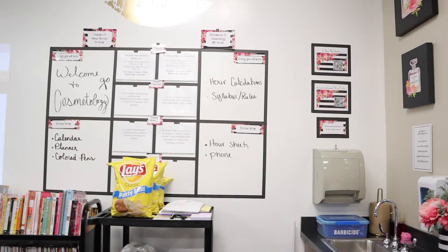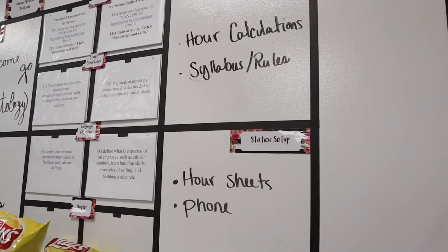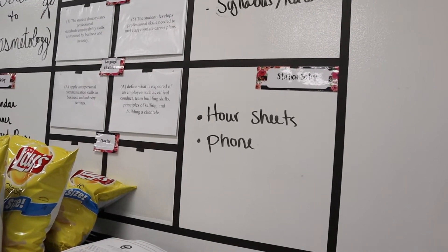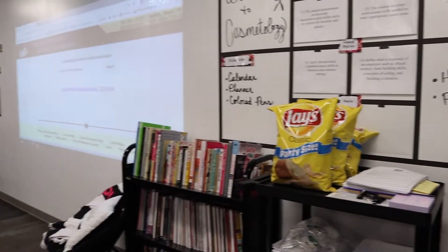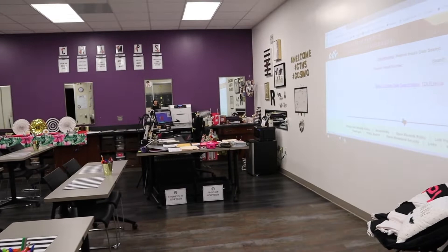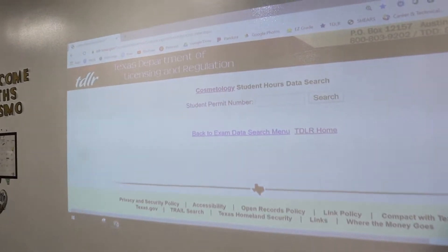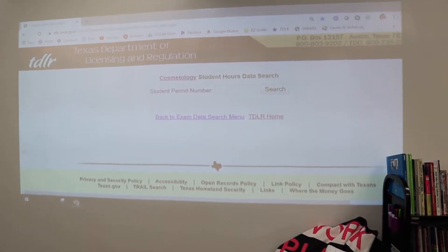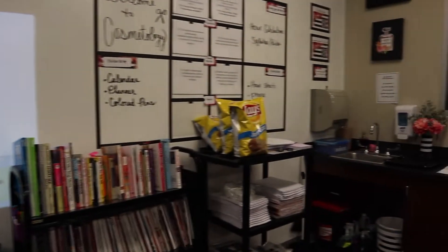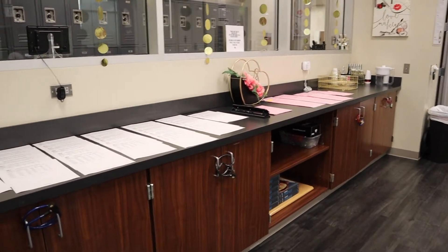So let me show you what we're going to do. As always, the students are going to come in. Today with my intro, we're going to do hour calculations from last semester and over the summer. We're going to go over the syllabus and the rules, and we're going to need to have them have their hour sheets and their phone, because they don't have a computer tablet yet issued out to them, so they need a way to check the TDLR search engine for their hours. So on the Promethean or on the whiteboard, I have the site pulled up. I do have Pandora on there as well, so they can come in and there's some lively music going.